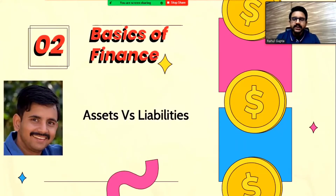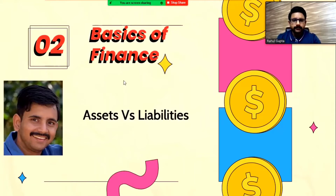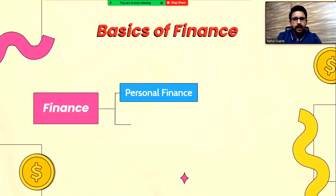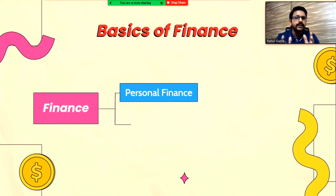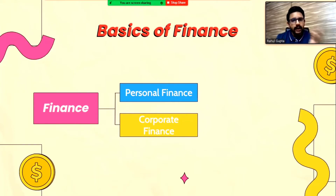Hello friends, this is the second video on basics of finance. In this video we are going to learn a very important concept: assets versus liabilities. Finance can be basically divided into two parts — one is called personal finance, which we are currently focusing on, and the other is called corporate finance, which is tackled by organizations and companies.